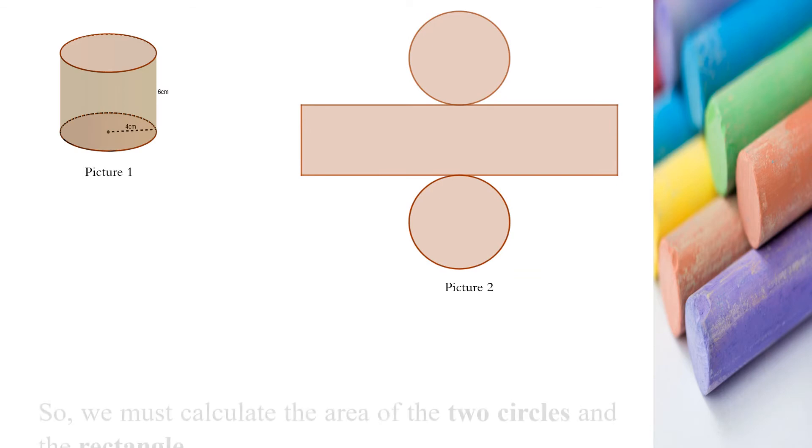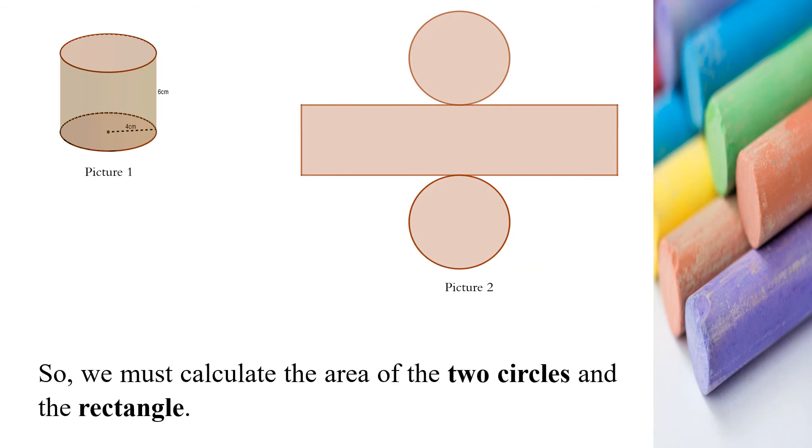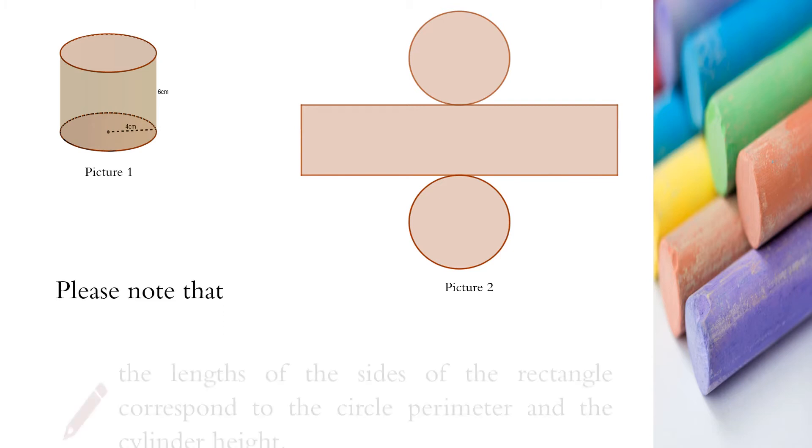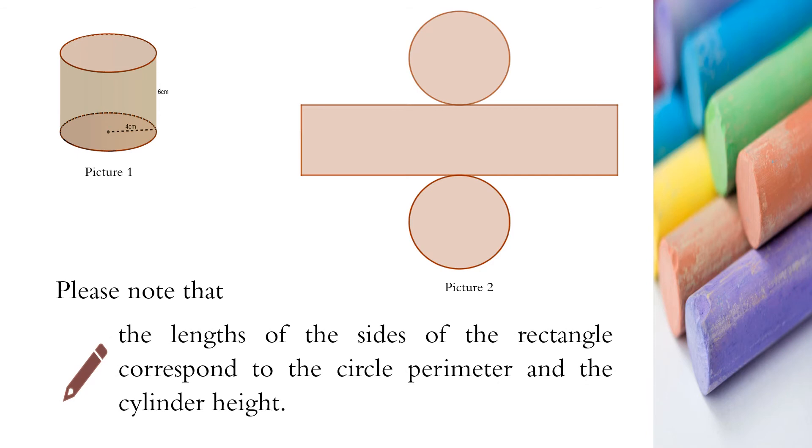So, we must calculate the area of the two circles and the rectangle. Please note that the length of the sides of the rectangle corresponds to the circle perimeter and the cylinder height.